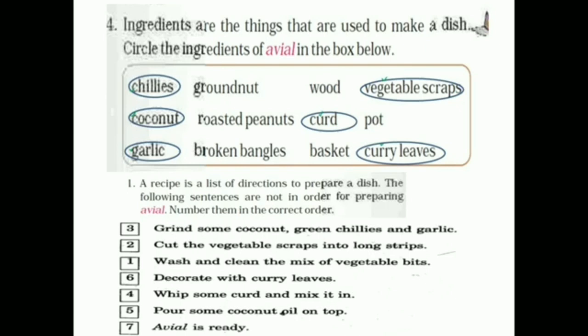So I am skipping the next true or false that we have to do through Google Meet. The next one, a recipe is a list of directions to prepare a dish. The following sentences are not in order for preparing avial, number them in the correct order. So there are so many items that are not in order. So you have to write in the order before every sentence. There is a box.